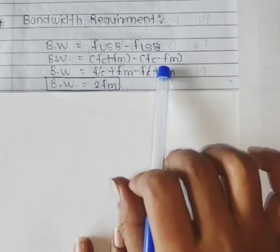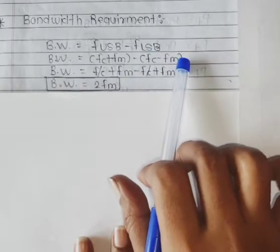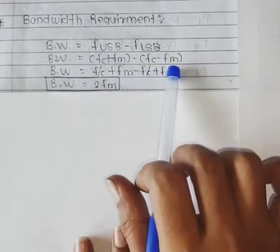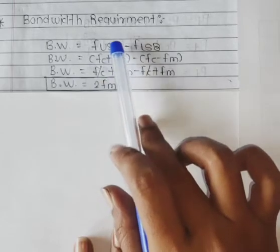That is f_c + f_m for upper sideband and f_c - f_m for lower sideband. So we have written the formula here.